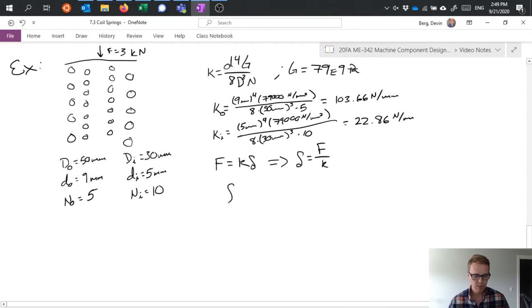So we can assume that they will both contribute to that force pushing back such that we get this force of 3000 newtons divided by two forces pushing back due to that spring rate, so 103.66 plus 22.86, since they're both contributing to that. And that's in newtons per millimeter, newtons over newtons cancel, one over millimeters becomes millimeters, and we get a deflection of 23.71 millimeters.